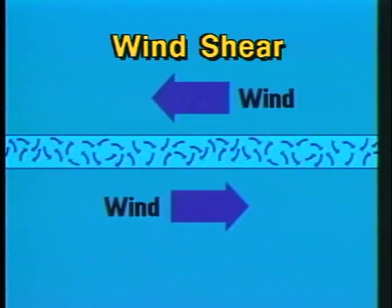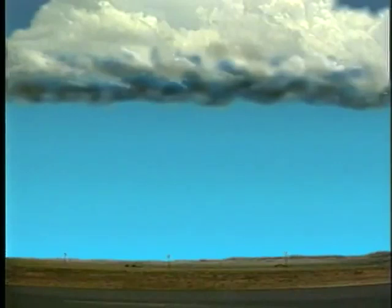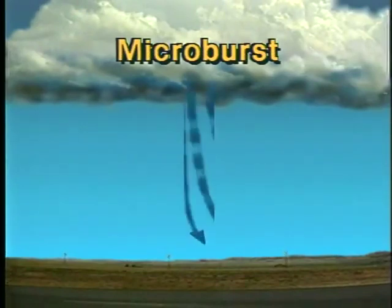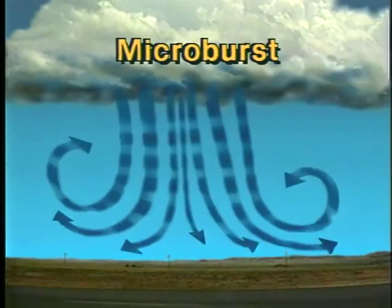One form of turbulence called wind shear is a sudden shift in wind speed or direction. It can occur at any altitude and in a vertical or horizontal plane. Wind shear is often associated with a more serious phenomenon called microburst.